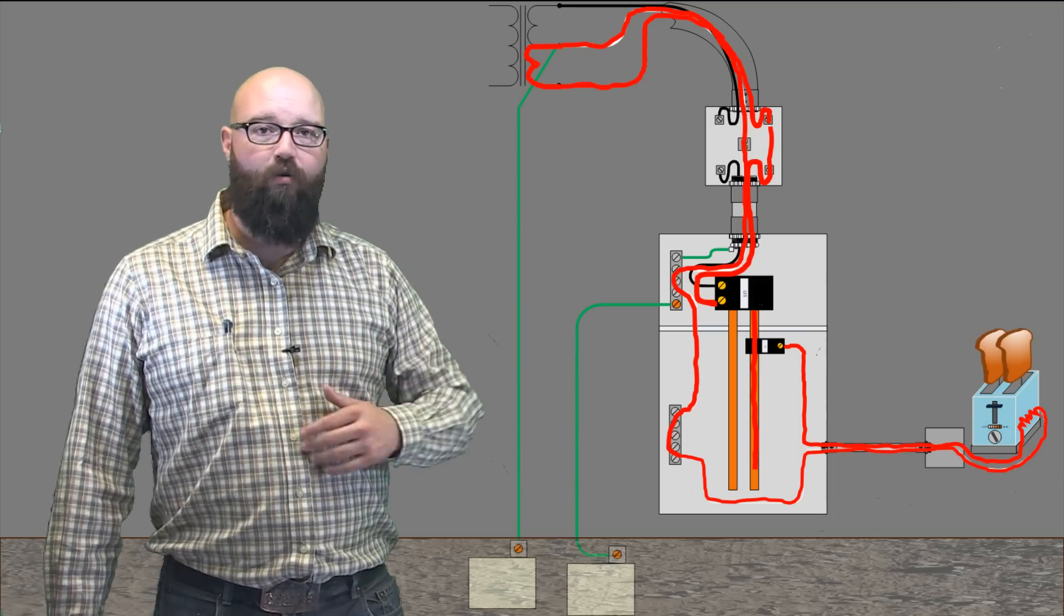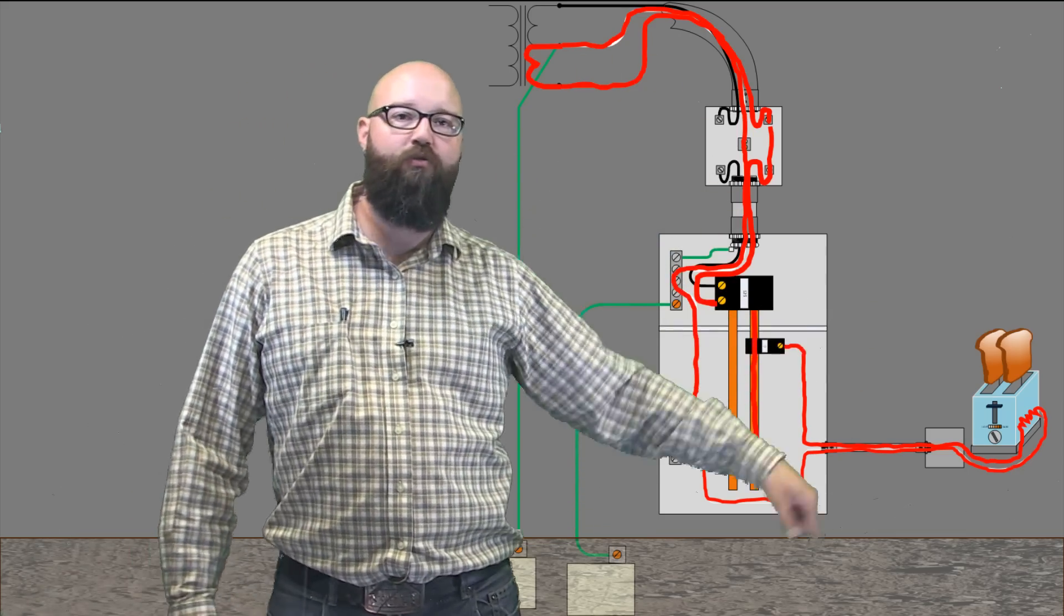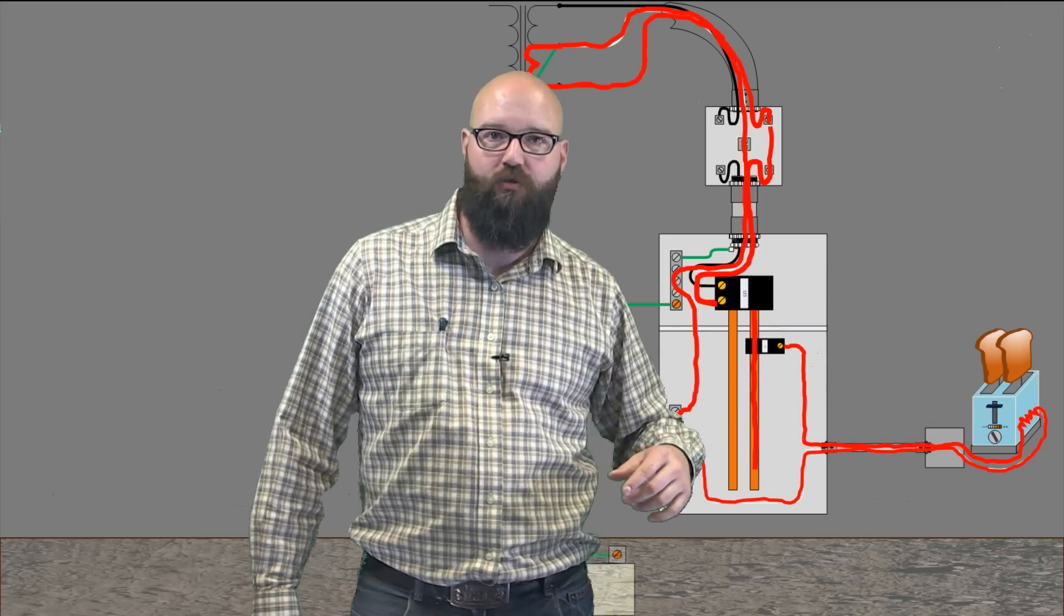Our load has been energized. We now see that full path for current flow. It is just a closed loop with a certain amount of impedance across it that opposes current.